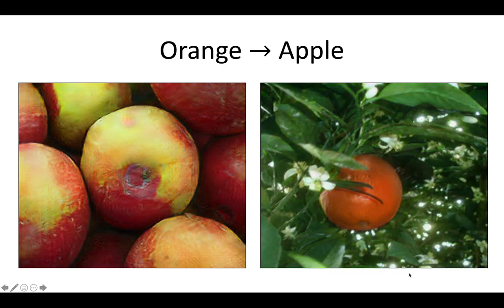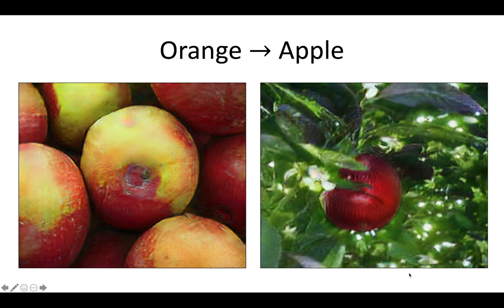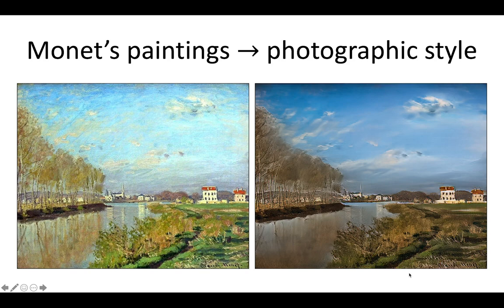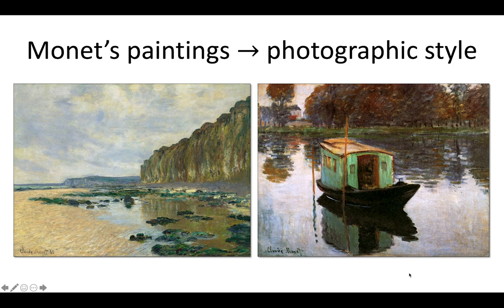With another orange you get another apple — CycleGAN seems to learn good correspondences across domains and can automatically locate the orange. We can also turn Claude Monet's paintings into a photographic style. Even without paired training data, we can learn visual realism from a set of natural photographs. Here are more results of Monet's paintings translated to real images.